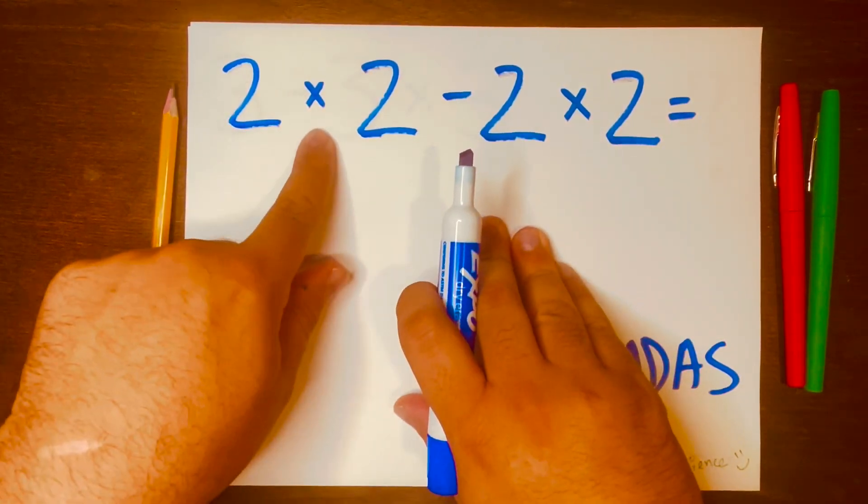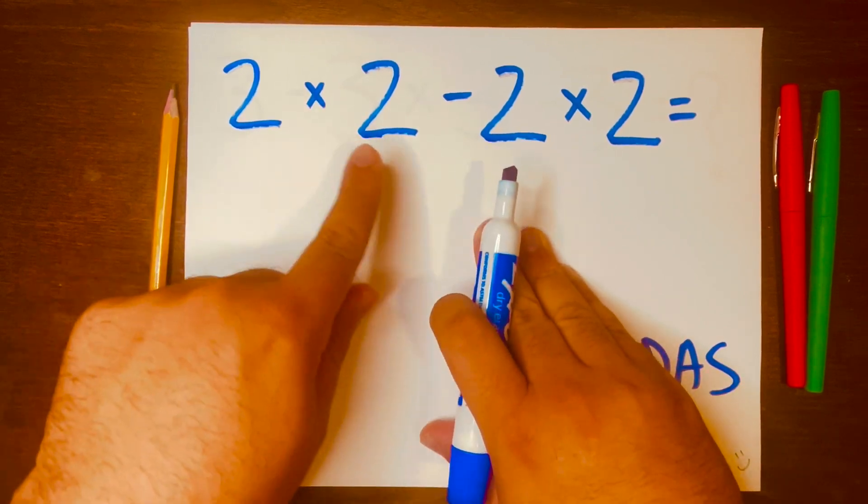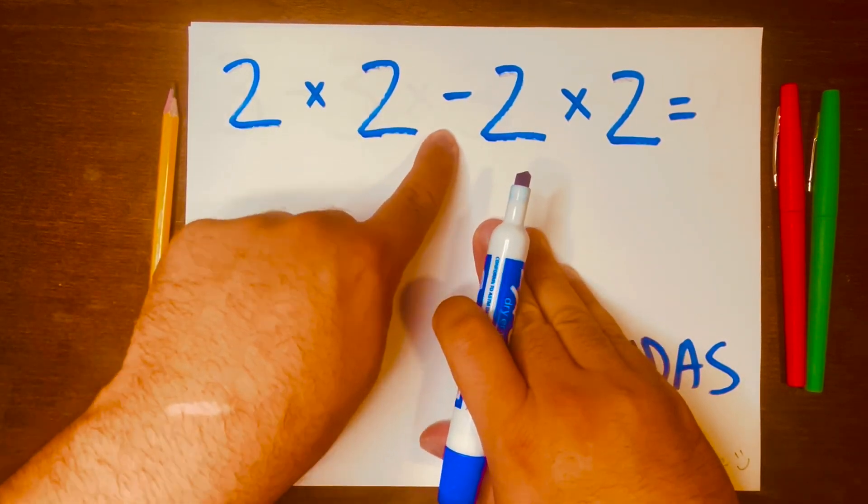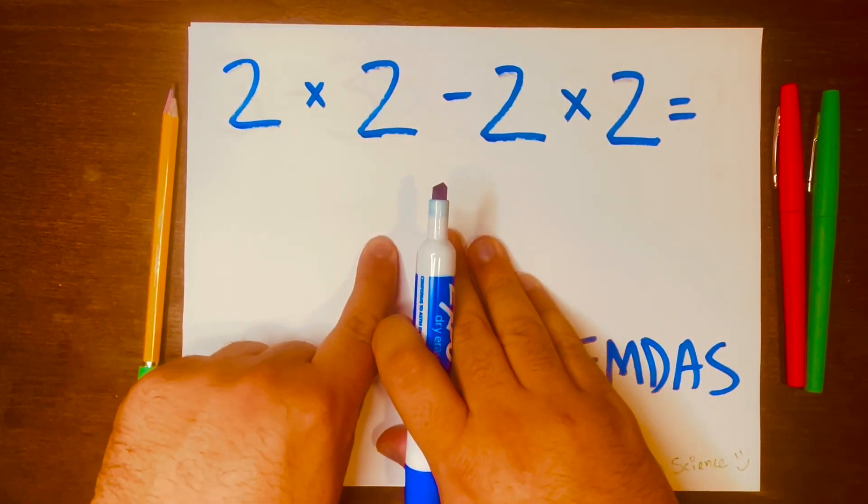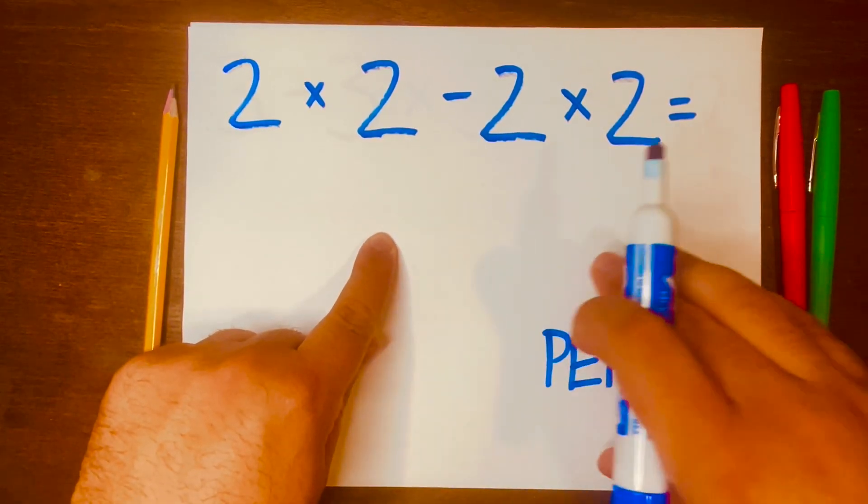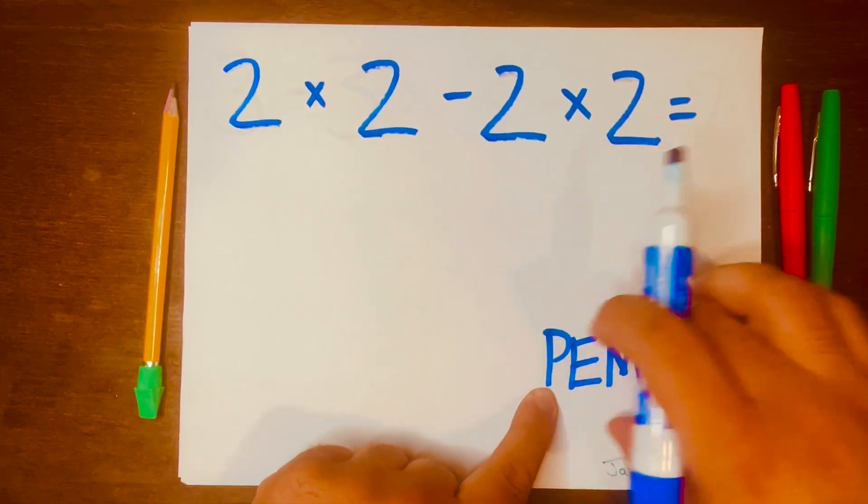The operations that I see are multiplying or multiplication and subtracting. So I need to figure out which way to start, and if you go back to PEMDAS...